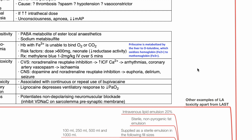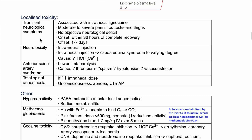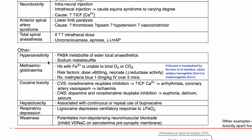Other examples of LA toxicity apart from LAST include transient neurological symptoms such as that caused by intrathecal lidocaine, neurotoxicity due to intra-neural injection, anterior spinal artery syndrome which may be caused by thrombosis, spasm, hypotension or vasoconstrictor effect, total spinal anaesthesia due to high intrathecal dose, hypersensitivity due to PABA metabolite of ester LAs or sodium metabisulfite, methemoglobinaemia such as that caused by ortho-toluidine — a metabolite of prilocaine — cocaine toxicity due to noradrenaline reuptake inhibition leading to sympathetic activation and CNS manifestations such as euphoria, delirium and seizure, hepatotoxicity with repeated or continuous use of bupivacaine, respiratory depression such as that caused by lidocaine, and potentiation of non-depolarizing neuromuscular blockade.